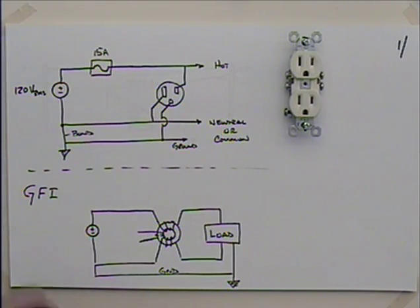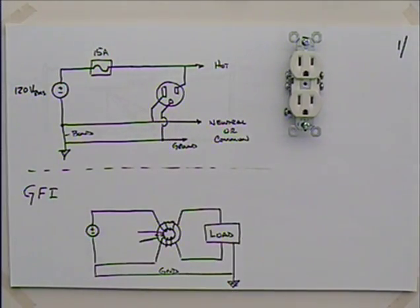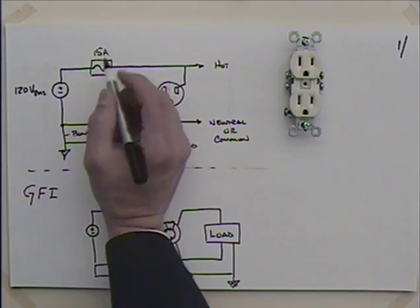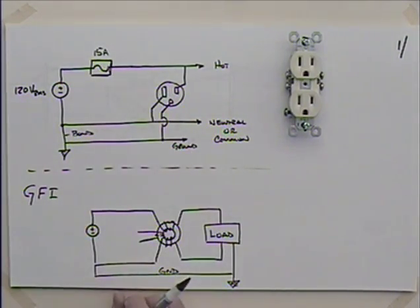We looked at a case where you had a fault in the appliance, some sort of short or something wrong, and while that ground path was important so it didn't go through the user, this circuit breaker, this fuse up here, is really just to protect the wiring because we know that 15 amps is more than enough to cook you.